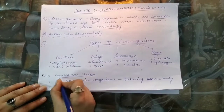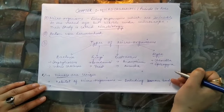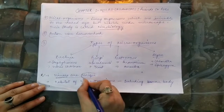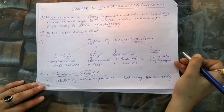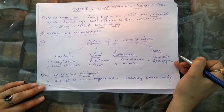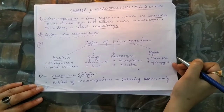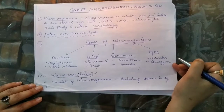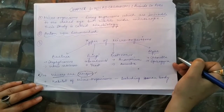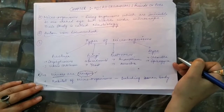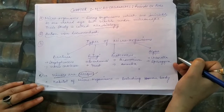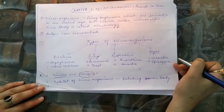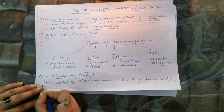Viruses are a unique kind of organism. They act as a borderline between living and non-living. Outside a host — which can be a plant, animal, or human being — they behave like non-living objects, just like salt and sugar crystals sitting in jars for years. But the moment they enter a host body, they become active, start reproducing, and can cause many diseases.